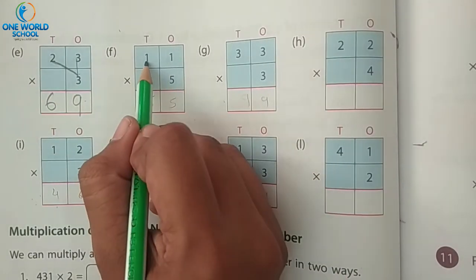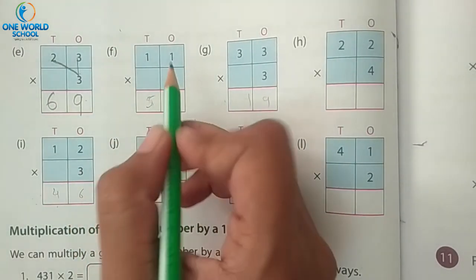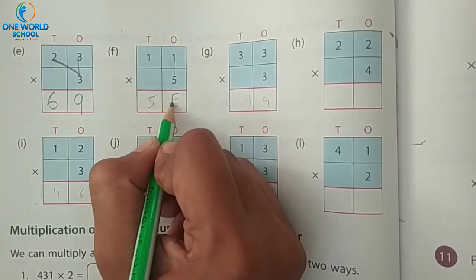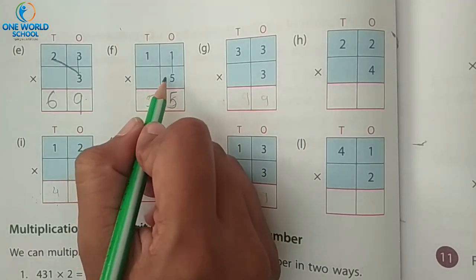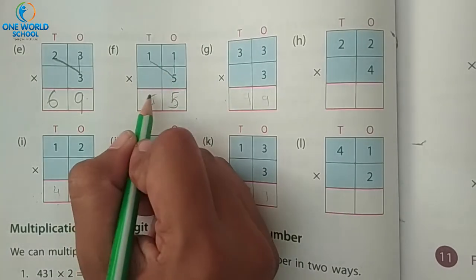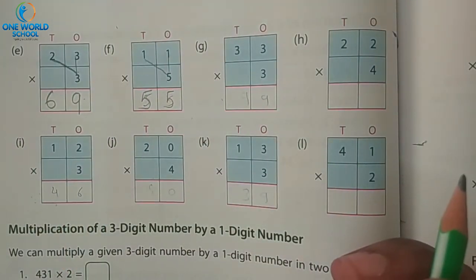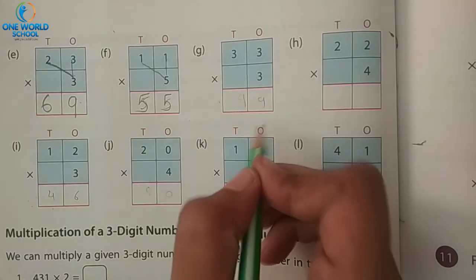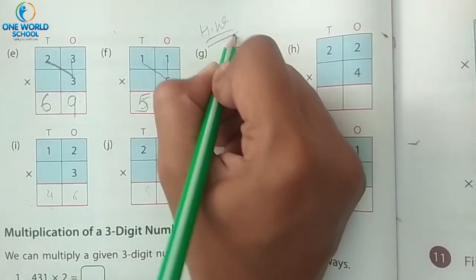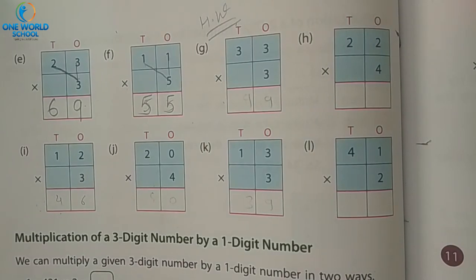Again: eleven multiply by five. Five ones are five. And now, which place? The tens place: five ones are five.